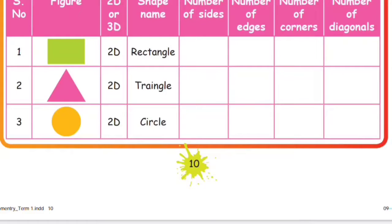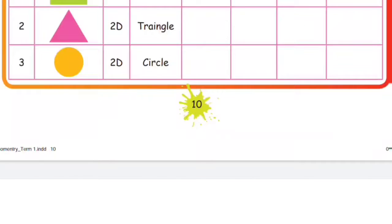Complete the following table by filling in the properties of 2D and 3D shapes. First, the figure is a rectangle — rectangle is a 2D shape. There are four sides and four corners. There are two diagonals. We also have 2D triangles, circles, etc.